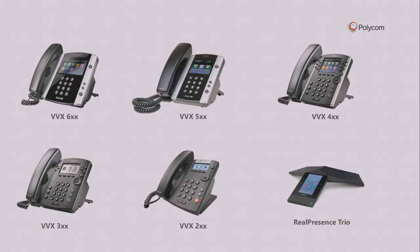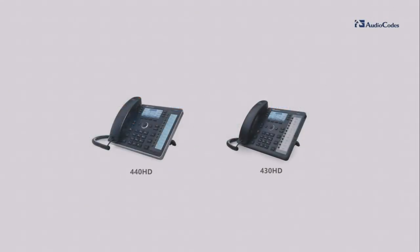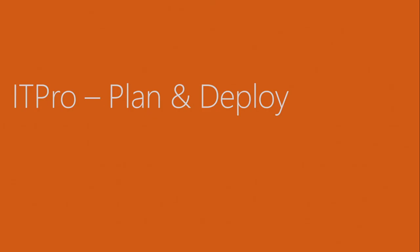A quick look at the current portfolio: Polycom has a range from the VVX 200, 300, up to the 600, and the RealPresence Trio for conferencing. Yealink has three devices — the T48G is the high-end, large touchscreen with a beautiful experience; the T46 is mid-range with buttons, more for the information worker; and a low-end for common area phones or basic purposes. AudioCodes has two ranges — the 440 and 430, high-definition. Given their background as one of our top gateway partners, you can expect best-in-class audio quality from those phones.